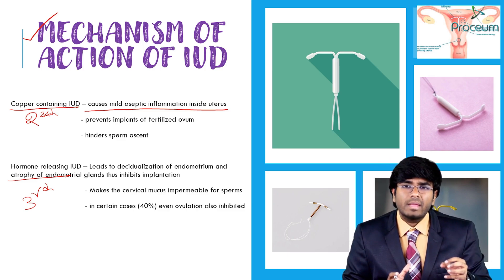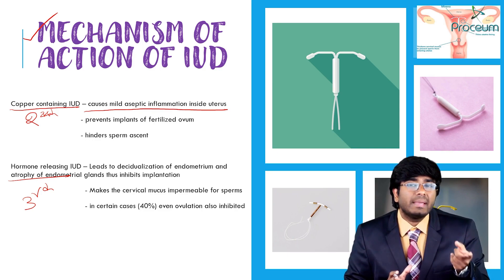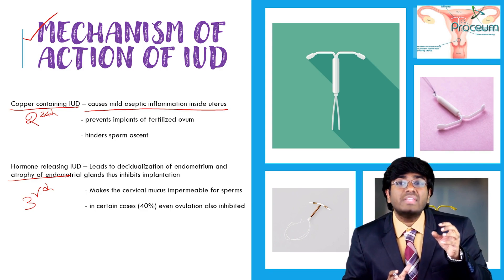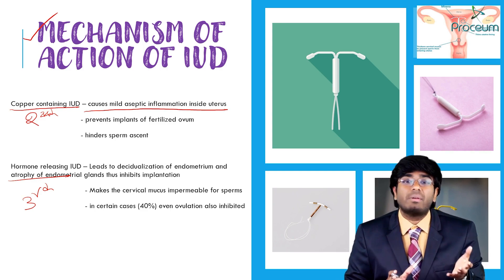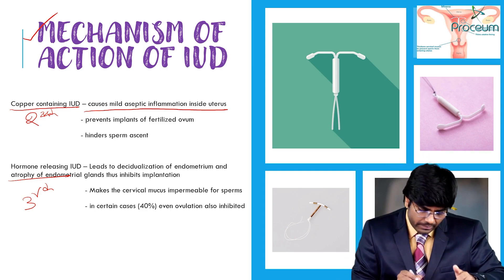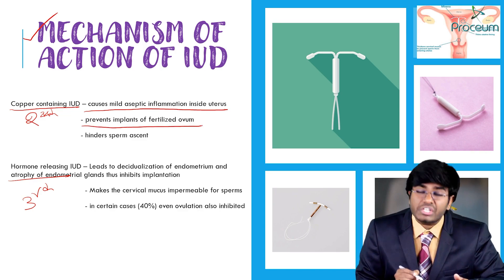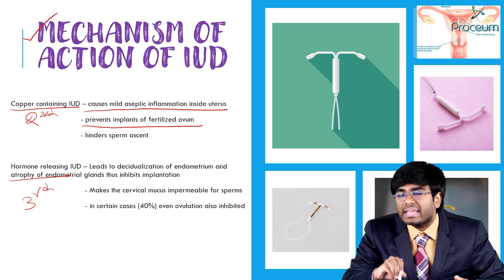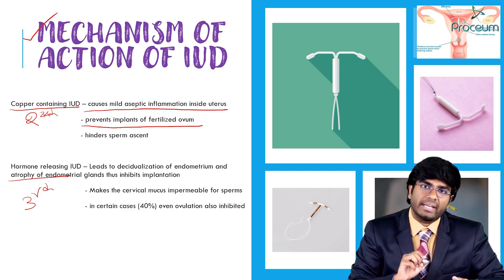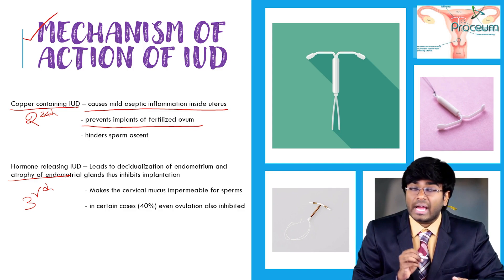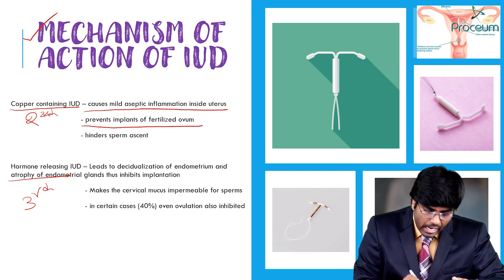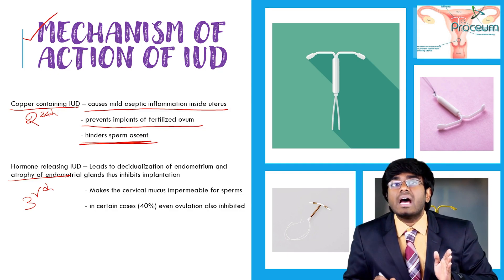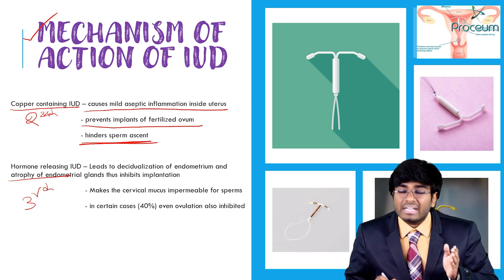Because of that mild endometrial inflammation, fertilization may still occur, but implantation of the fertilized ovum cannot happen — because the endometrium is inflamed. So copper IUDs prevent implantation of a fertilized ovum even if fertilization has taken place.